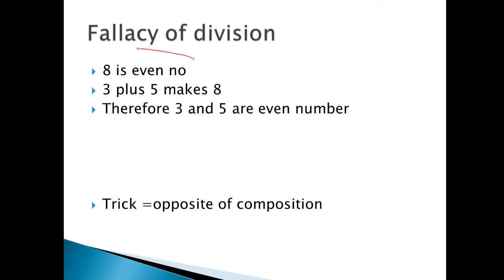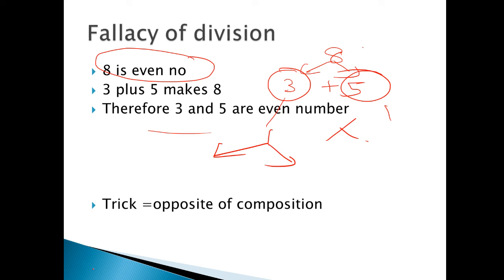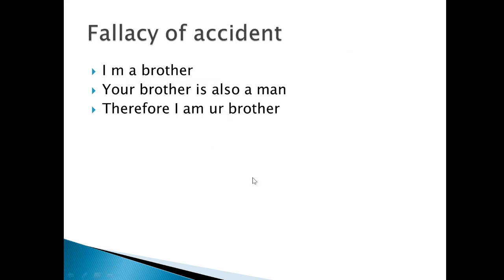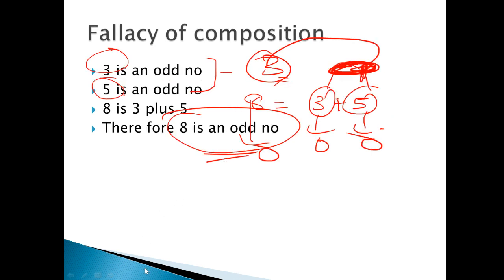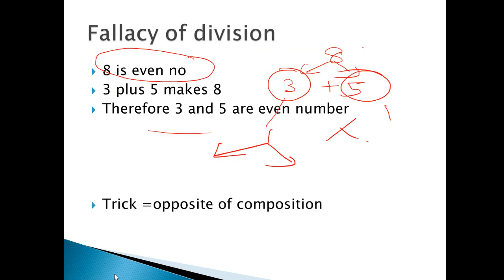After composition comes division. Division is exactly opposite of composition. It means look, now doing the reverse: eight is an even number. So here eight is even, so they broke it down - three plus five makes eight. Therefore three is also even and five is also even. But three and five are not even numbers. So in division we go from one thing to two parts, and in composition we go from two to one. This is our fallacy of division.